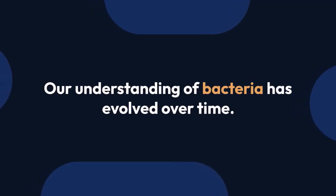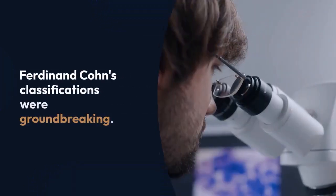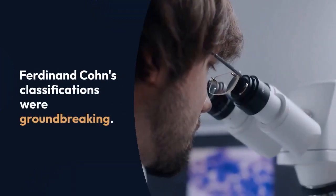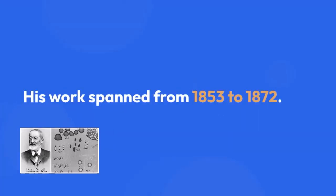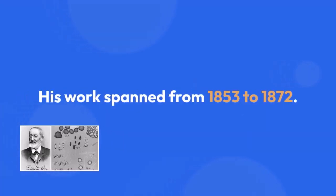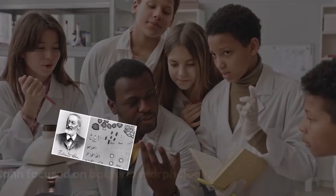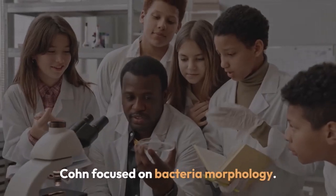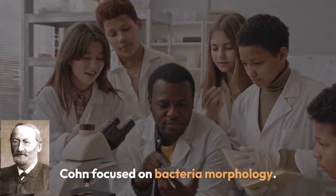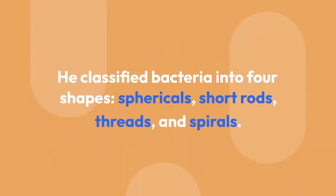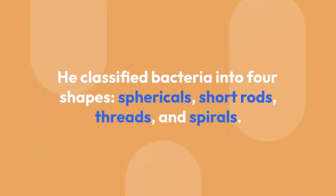Kohn's classification was groundbreaking, though his work was banned for 20 years. Kohn focused on bacterial morphology. He classified bacteria into four shapes: spherical, short rods, threads, and spirals. This classification is still used today.